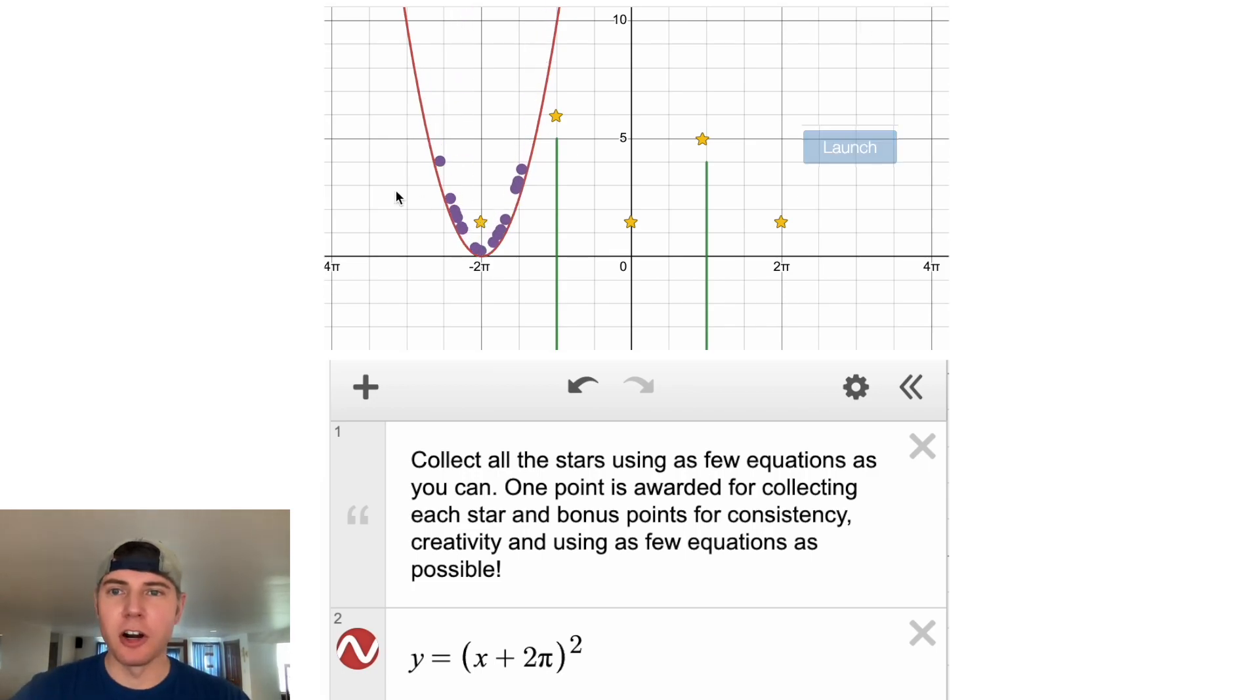We're missing the star, so let's shift it up. So the way to shift the whole graph up is we're going to say plus outside here, one, and now let's see if it hits that star. Nice.